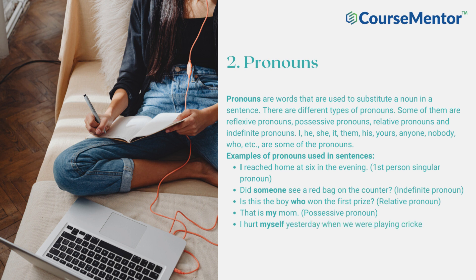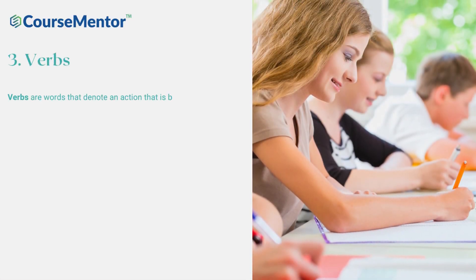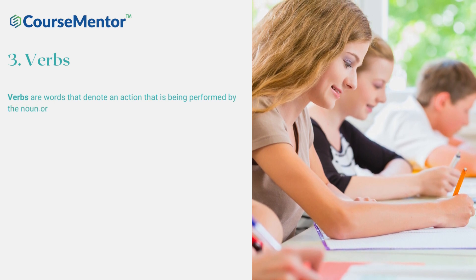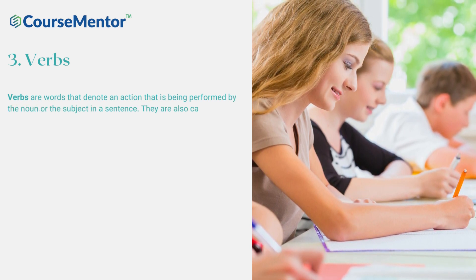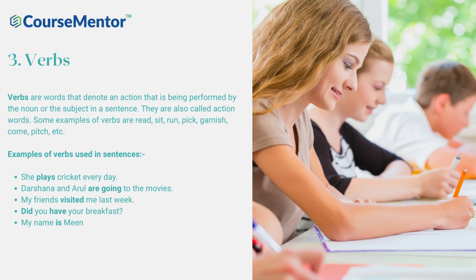I hurt myself yesterday when we were playing cricket. (Reflexive pronoun) Verbs. Verbs are words that denote an action that is being performed by the noun or the subject in a sentence. They are also called action words. Some examples of verbs are read, sit, run, pick, garnish, come, pitch, etc. Examples of verbs used in sentences: She plays cricket every day. Darshana and Arul are going to the movies. My friends visited me last week. Did you have your breakfast? My name is Meenakshi Kishore.